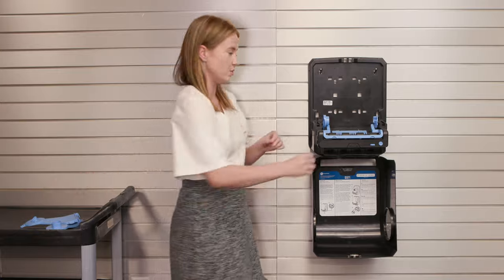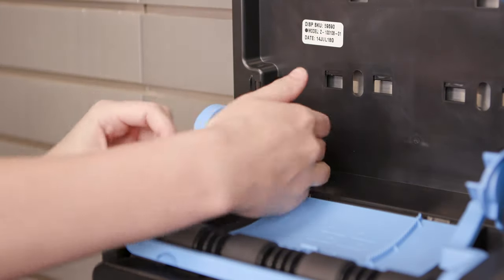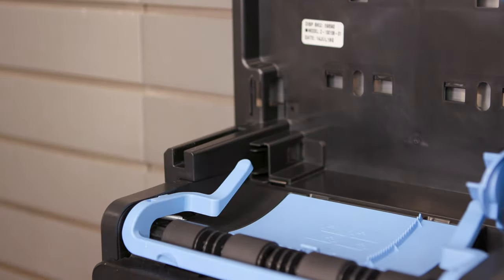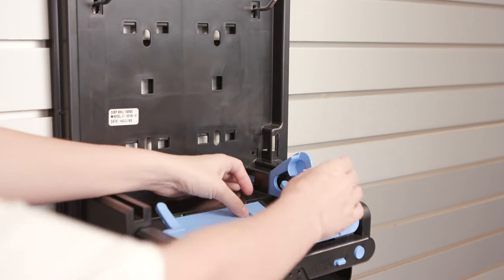Once the top two are out, you'll want to do the same thing with the stub roll holders at the bottom. Take the second one out.